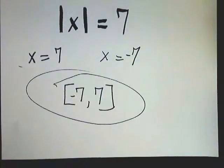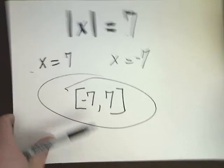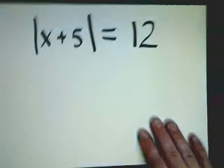So let's look at another one, one that's a little bit more complicated. Oh, by the way, as a quick reference, if x is by itself, just pick the positive and negative of the 7, and you have both answers that you need. Now, for this type, I have to solve an actual equation.